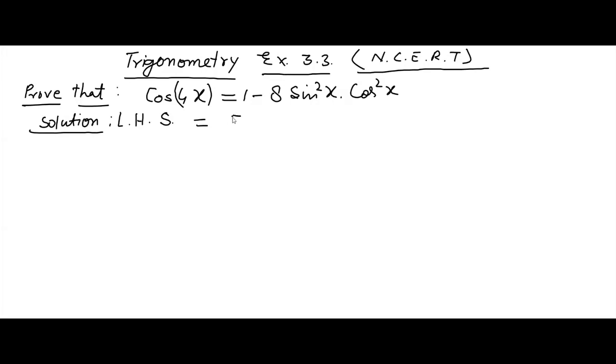This left hand side we have cos 4x. Now cos 4x may be written as cos 2 into 2x. And we know that the formula for cos 2x is equal to 1 minus 2 sin²x.